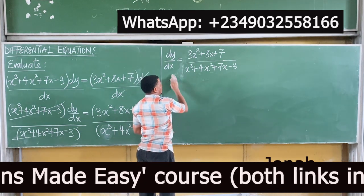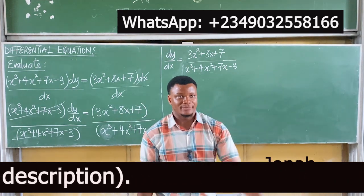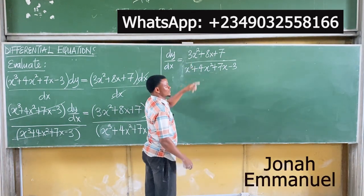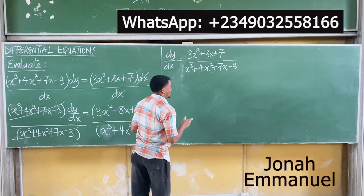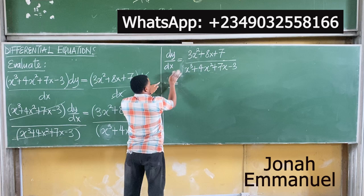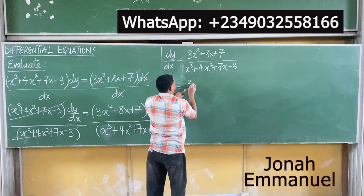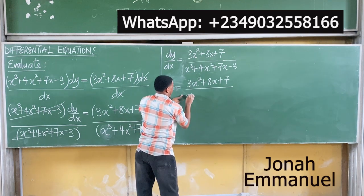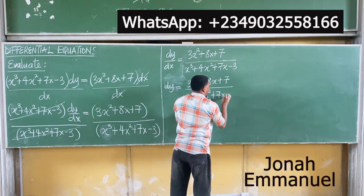Partial fraction rules — they are free on my channel. Go ahead and watch them. But for this condition, I know if I differentiate the denominator I will get the numerator, so I will use integration by substitution. Move this line over: dy is equal to 3x squared plus 8x plus 7, all over x cubed plus 4x squared plus 7x minus 3, dx.